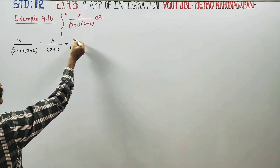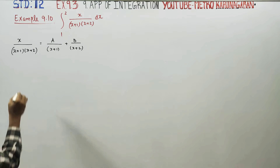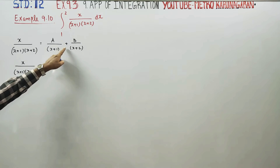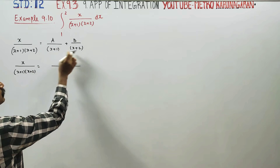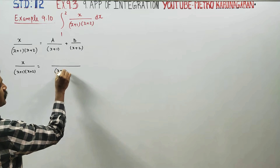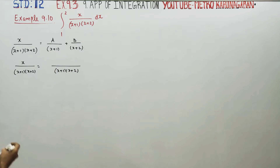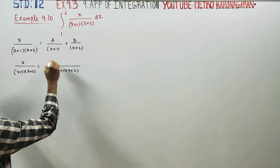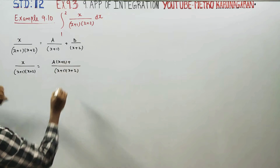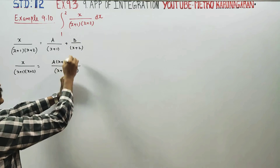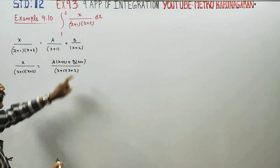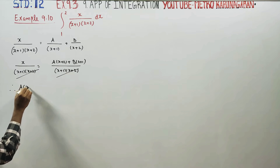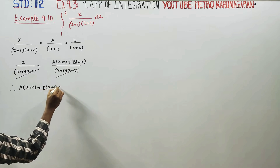Taking the LCM of (x plus 1) and (x plus 2), and cross multiplying, we arrive at the equation: A into (x plus 2) plus B into (x plus 1) is equal to x.